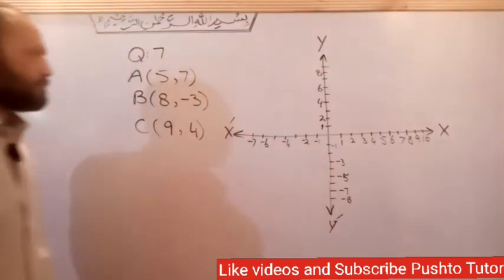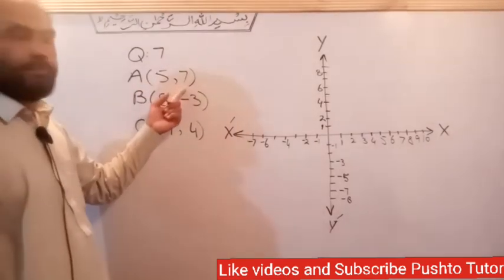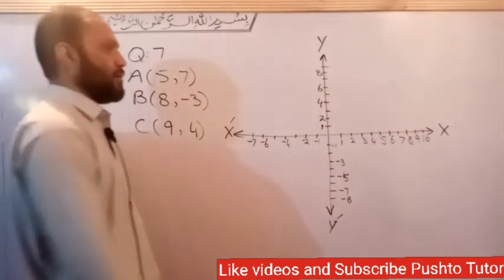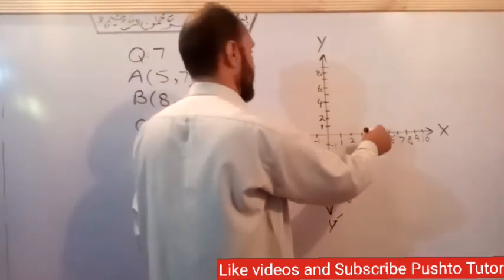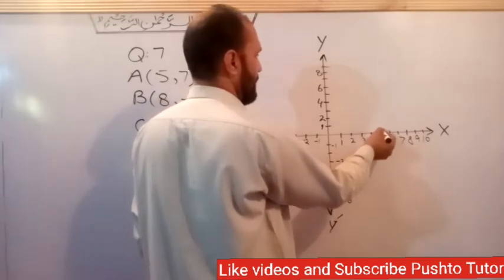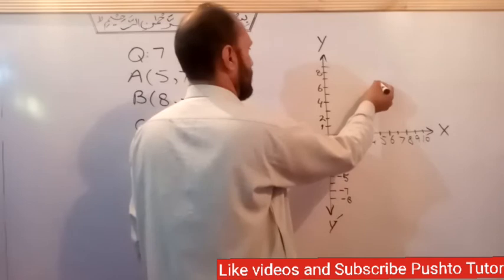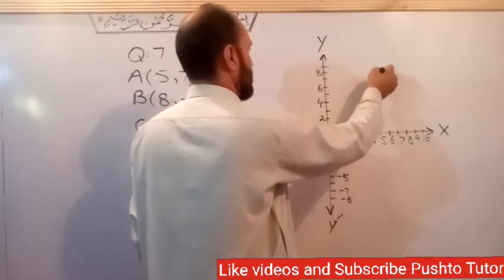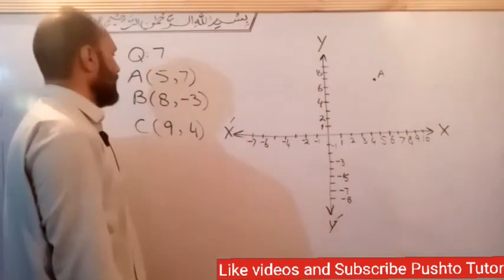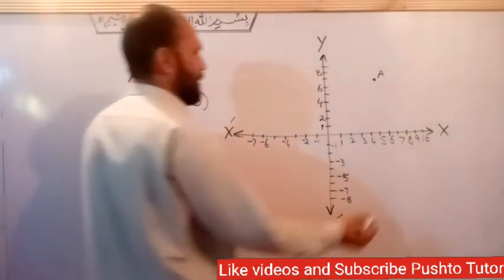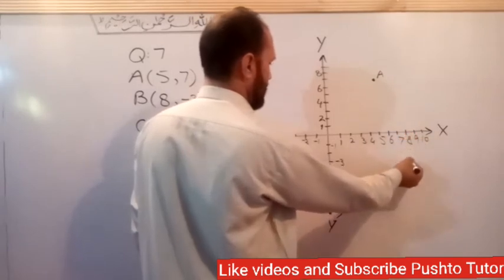The point A is (5, 7). It is in the first quadrant. On the x-axis at 5, and on the y-axis at 7. Now for point B, it is (8, minus 3). On the x-axis at 8 and on the y-axis at minus 3.